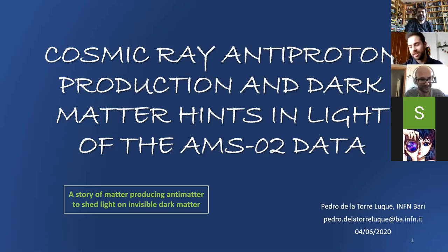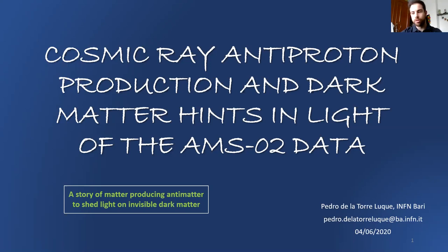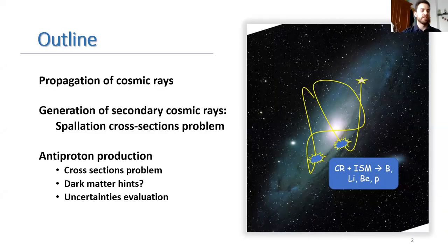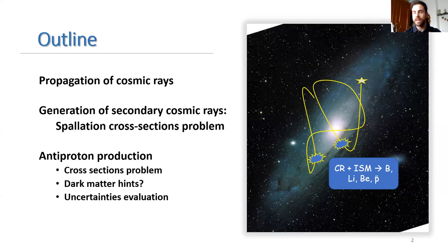Hi, thank you, Daniele. I'm very glad to be doing this talk, although I would have preferred to be there in person. In this talk, I will speak about the antiproton production by cosmic rays during their propagation in the galaxy and the compatibility of our predictions with dark matter candidates. I will start with a quick review on the propagation of cosmic rays, then go to the generation of secondary cosmic rays — namely boron, beryllium and lithium — since they are the tools we use to better test our models. Finally, I will consider antiprotons and analyze our predictions against the dark matter hypothesis.